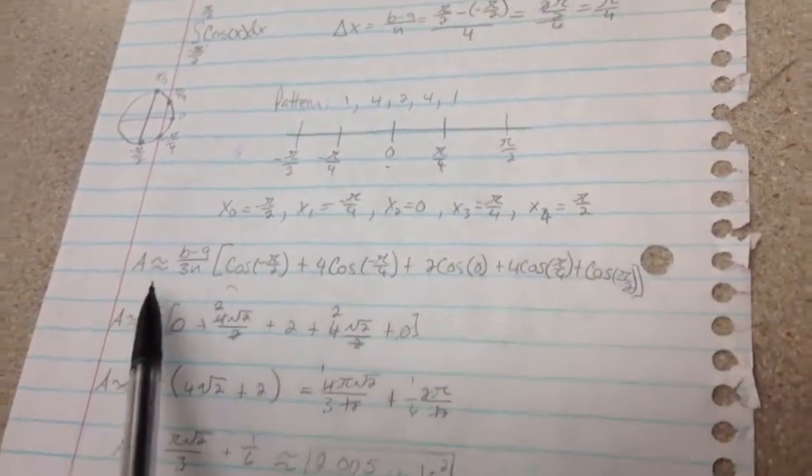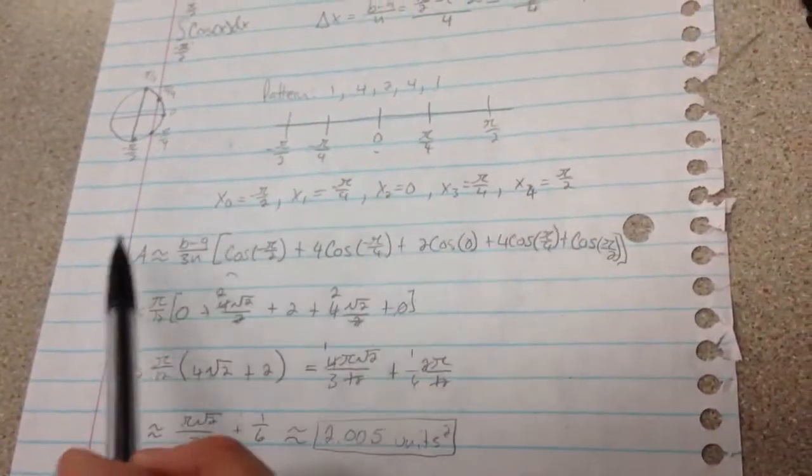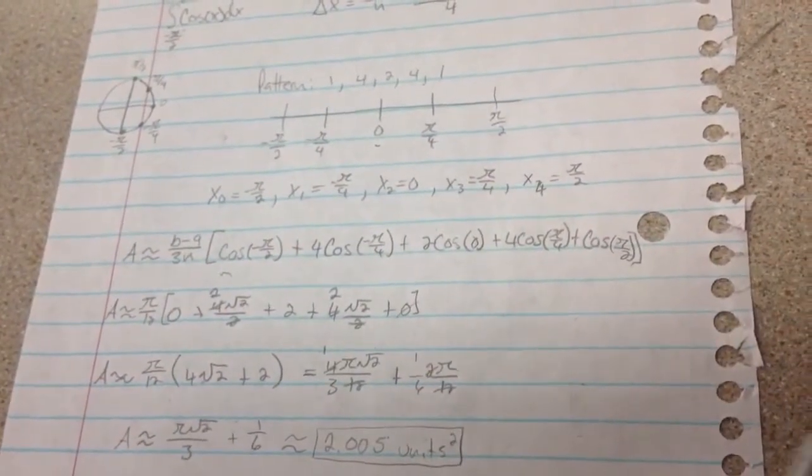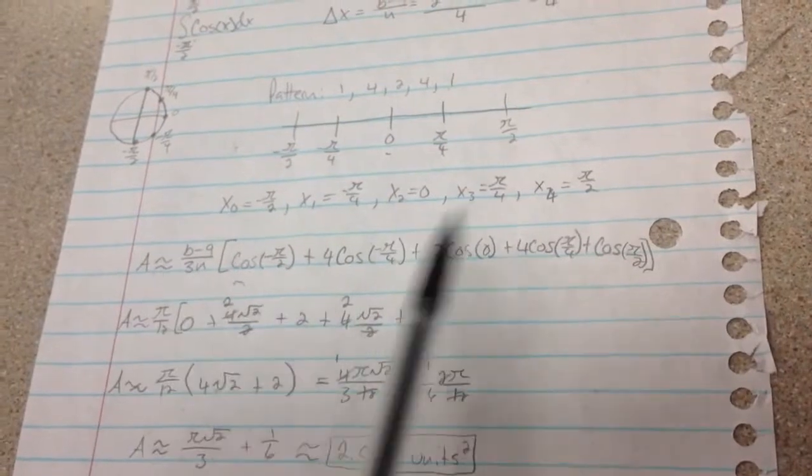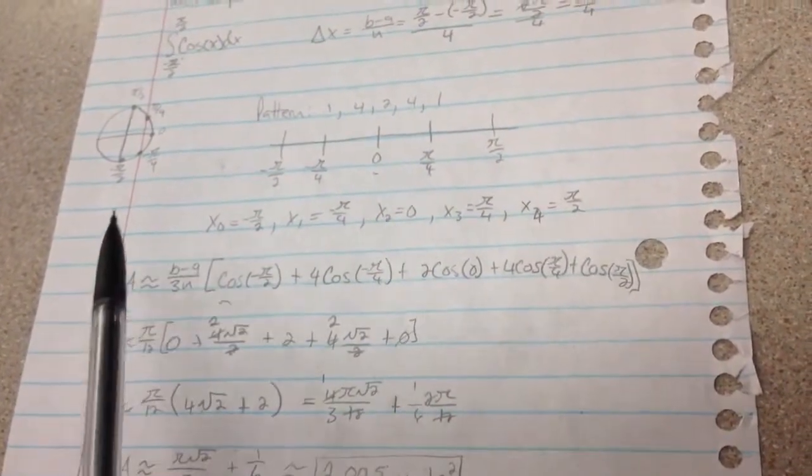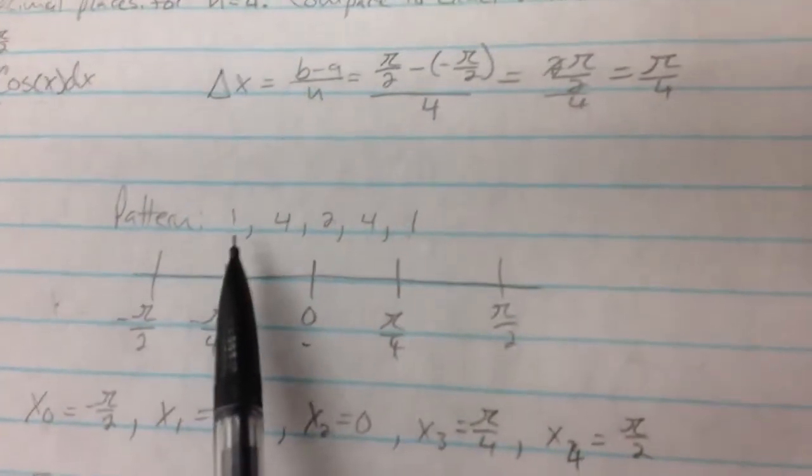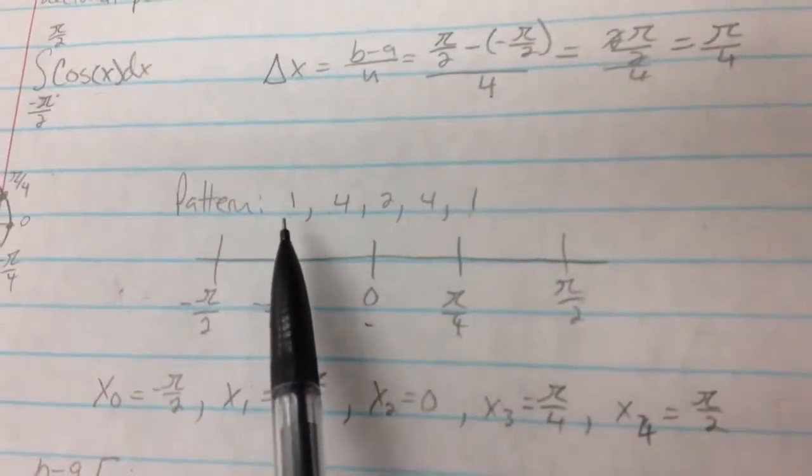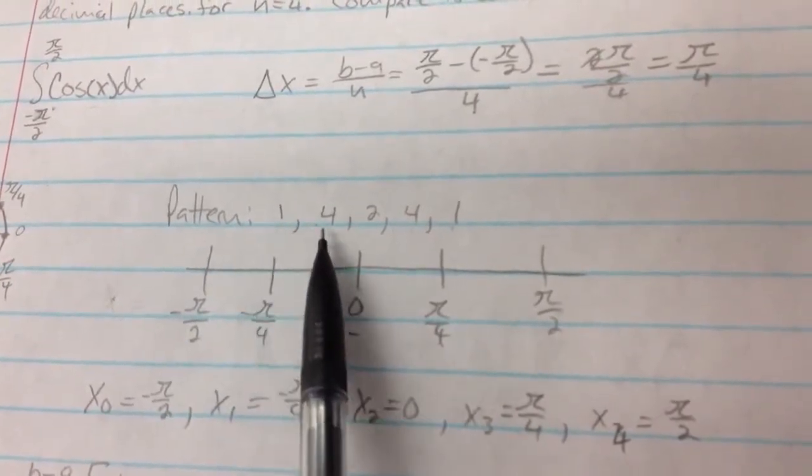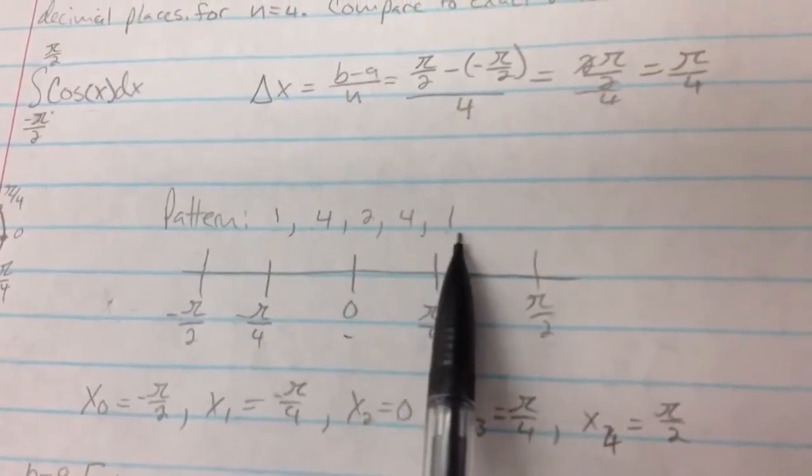And then we are actually just going to plug that into our equation here. So the first thing that you need to know about Simpson's rule is that Simpson's rule always has to have a certain number of terms because it follows the pattern of coefficients, which I kind of wrote in last minute up here. But the coefficient pattern is going to be 1, 4, 2, 4, 1.